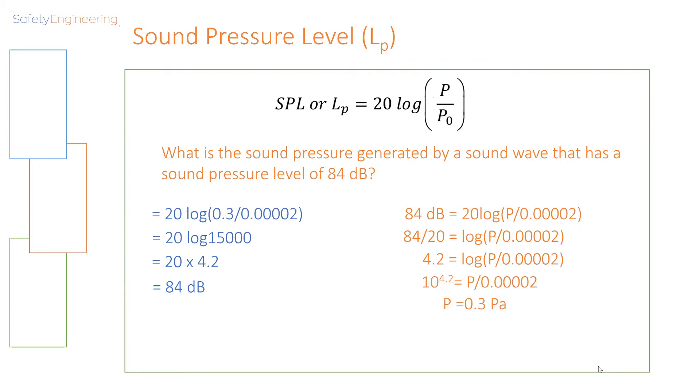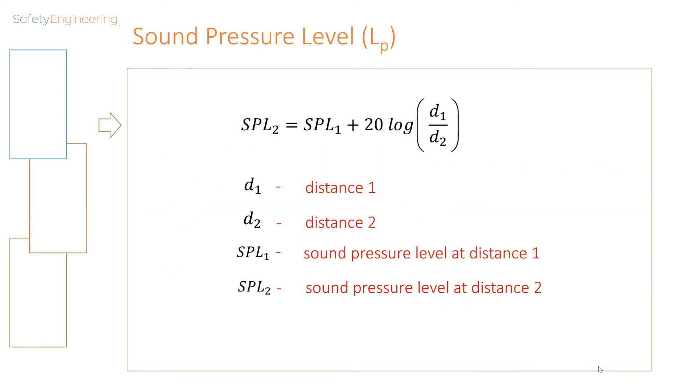We now need to get rid of our log value. And to do that, we raise it to the power of 10. We also have to do the equivalent on the left side of the equation. By doing this, we are going to eventually end up with our answer of 0.3 pascals. This equation is used to calculate the sound pressure level at varying distances, before that certain information is available.